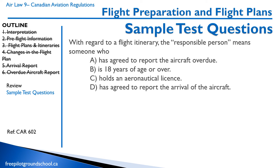With regard to a flight itinerary, the responsible person means someone who: A, has agreed to report the aircraft overdue — yes, that's correct; B, is 18 years of age or older — no, that's not a requirement; C, holds an aeronautical license — no; D, has agreed to report the arrival of the aircraft — no, you don't need to report the arrival, you just have to report if it's overdue. The correct answer is A.